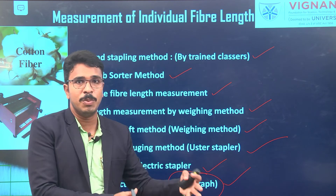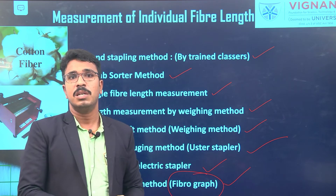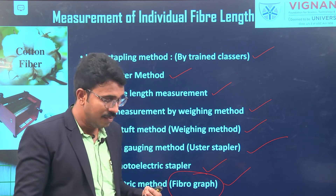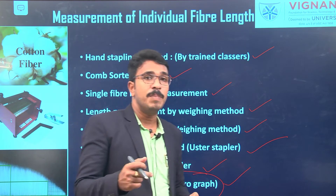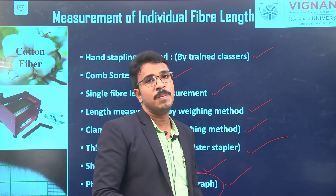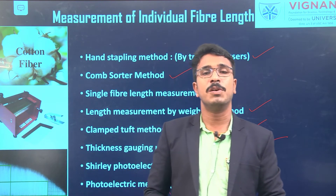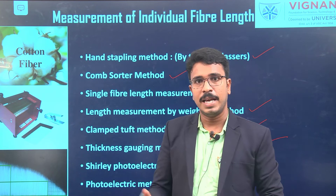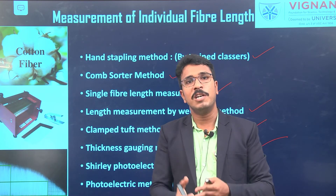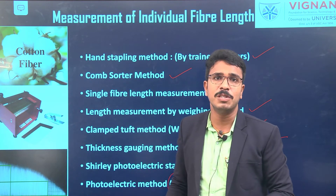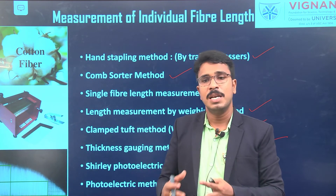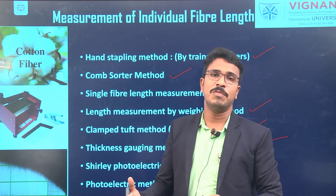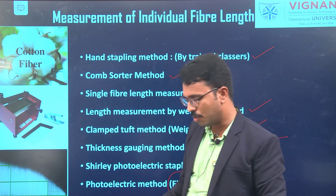The fibrograph gives fiber length related parameters in the form of span length — the 2.5% span length and the 50% span length — from which we can calculate uniformity ratios. It is a completely automated method. Out of all these methods, we will concentrate mainly on the comb sorter method and the photoelectric method.